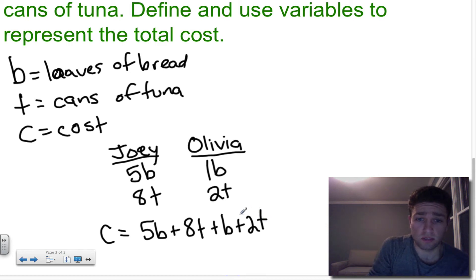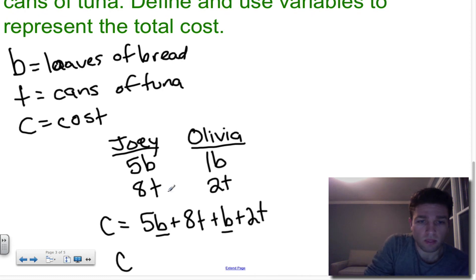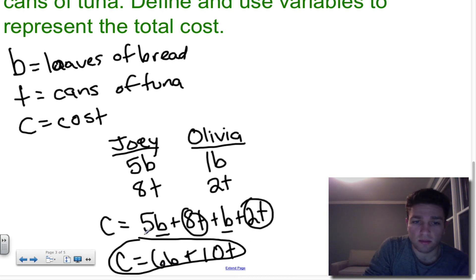We're looking for the total cost. So I'm going to create an expression: c, cost, equals 5 loaves of bread plus 8 cans of tuna plus 1 loaf of bread plus 2 cans of tuna. Now, this is where combining like terms comes in handy. I can see that I have b and b. Those can be combined. So c equals 5 plus 1 is 6 loaves of bread plus 8 tuna and 2 tuna, which is a total of 10 cans of tuna. And I have just created an expression, simplified it, combining like terms. And it's as simple as that.